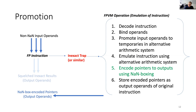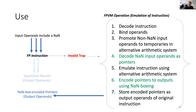These NaN-box pointers can then become input to a different instruction. When input operands include a NAN, they go into a floating point instruction and cause an invalid trap. That again invokes FPVM, which does pretty much the same thing as described before, except now it also decodes the NAN input operands back to the alternative number system. So these are the three common scenarios.